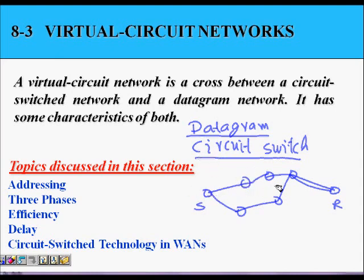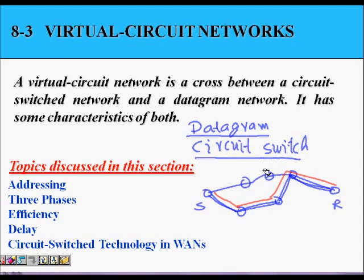In a circuit switched network, it's like a telephone network. First you make a call setup and then you reserve resources, meaning you reserve a particular path with guaranteed bandwidth for your telephone call. Both have their benefits and disadvantages. In a datagram network there is more resource utilization — more users can be allocated. In a circuit switched network, resources are allocated to users, so if they are not active, bandwidth and network resources are underutilized.